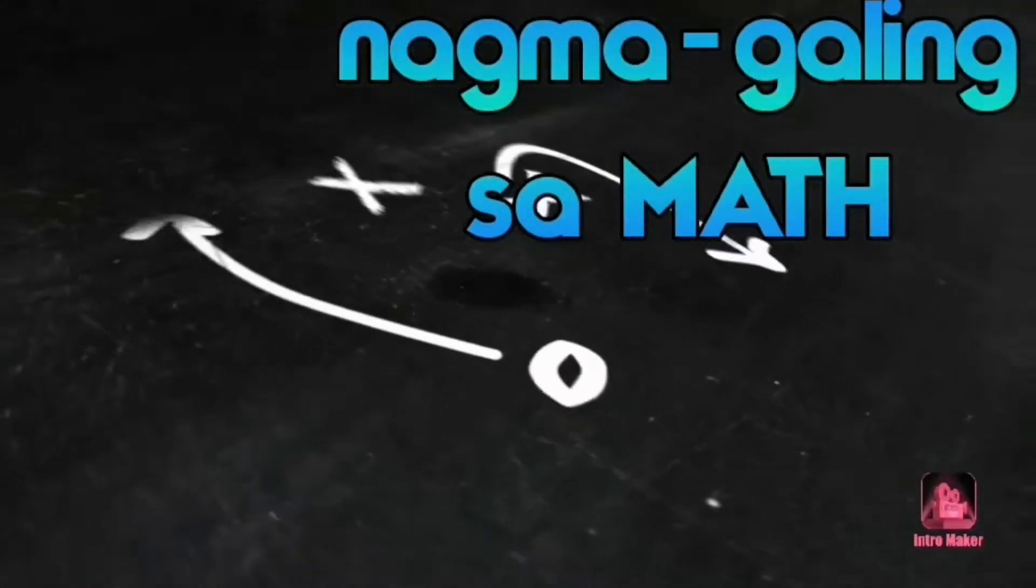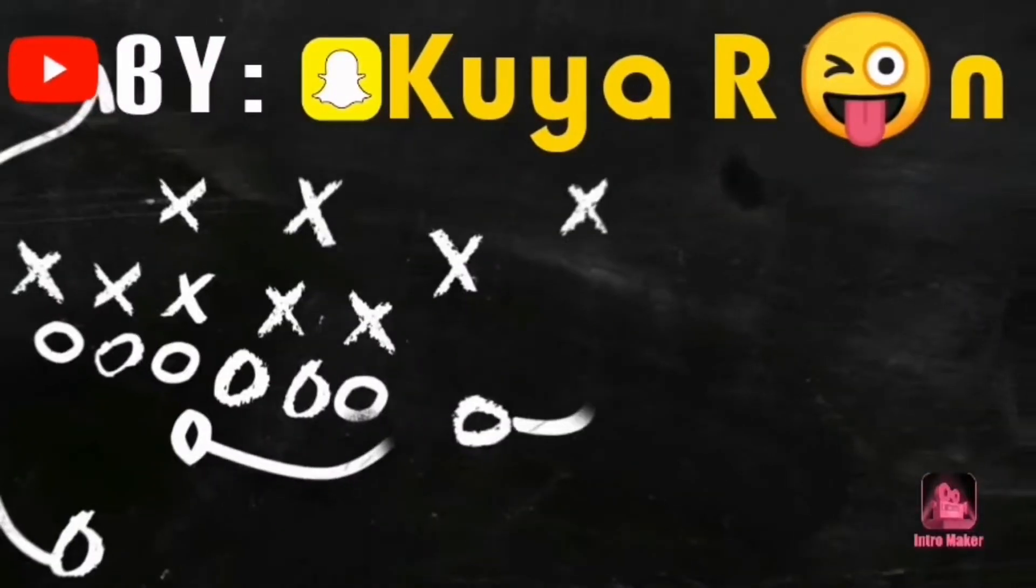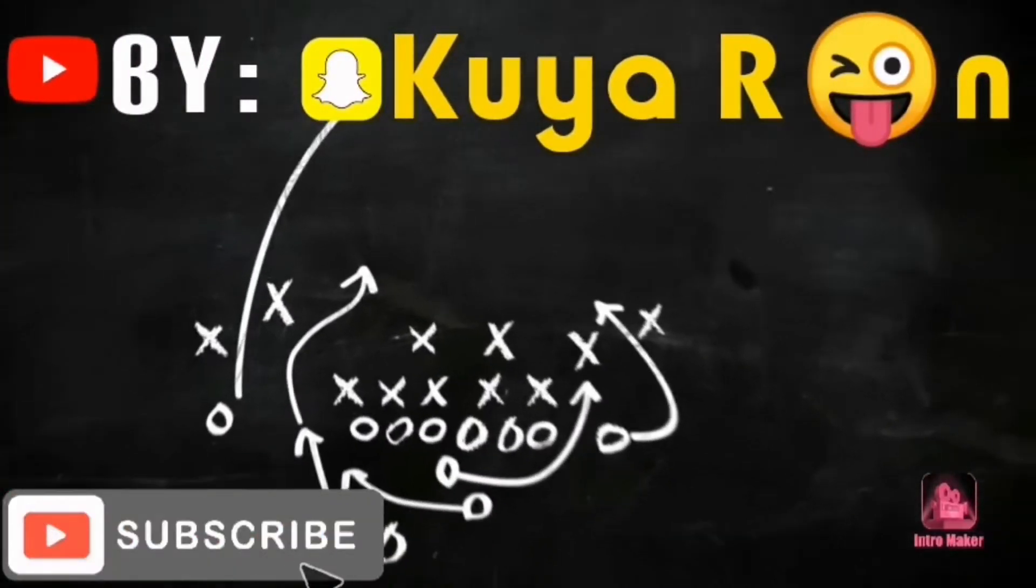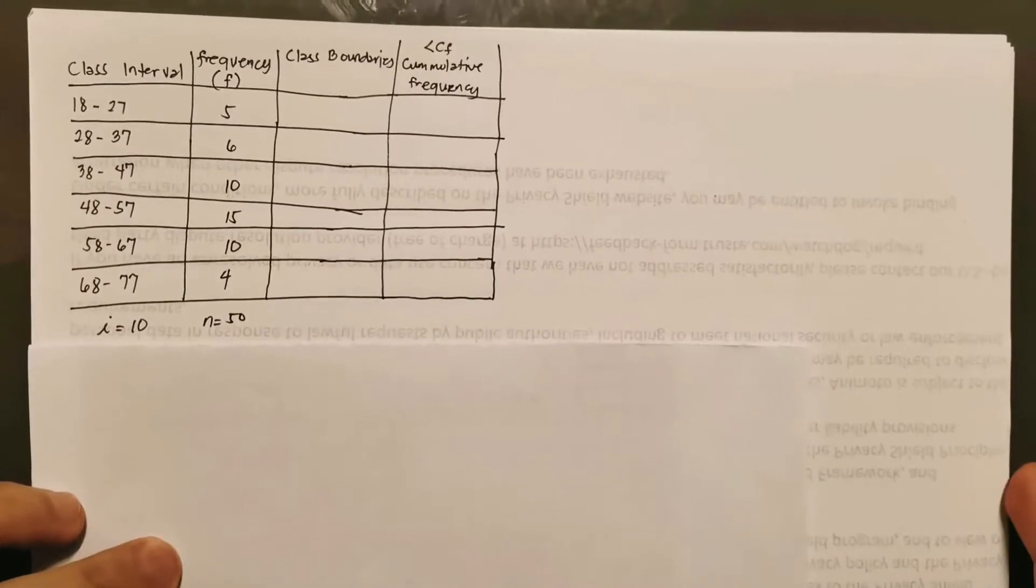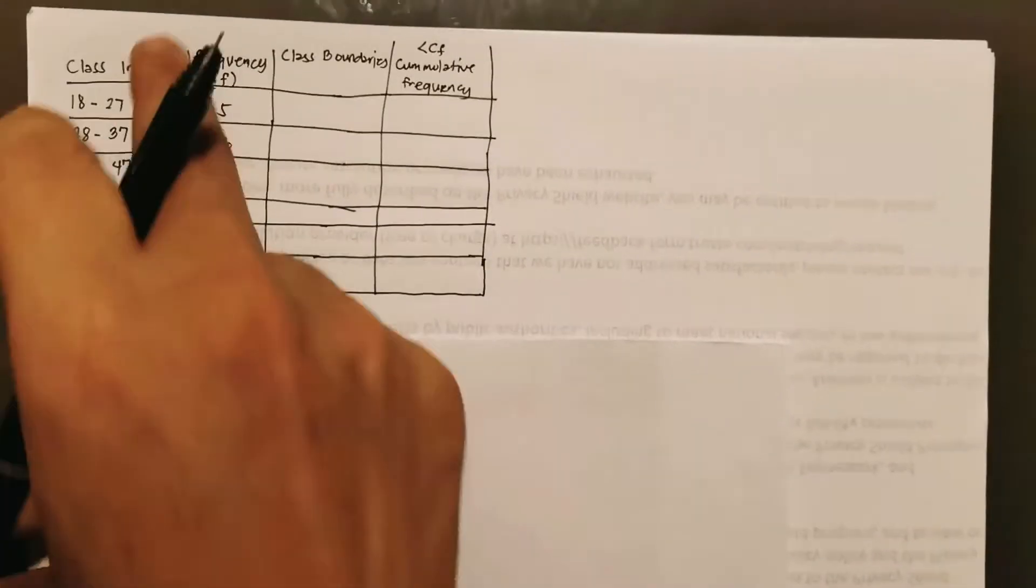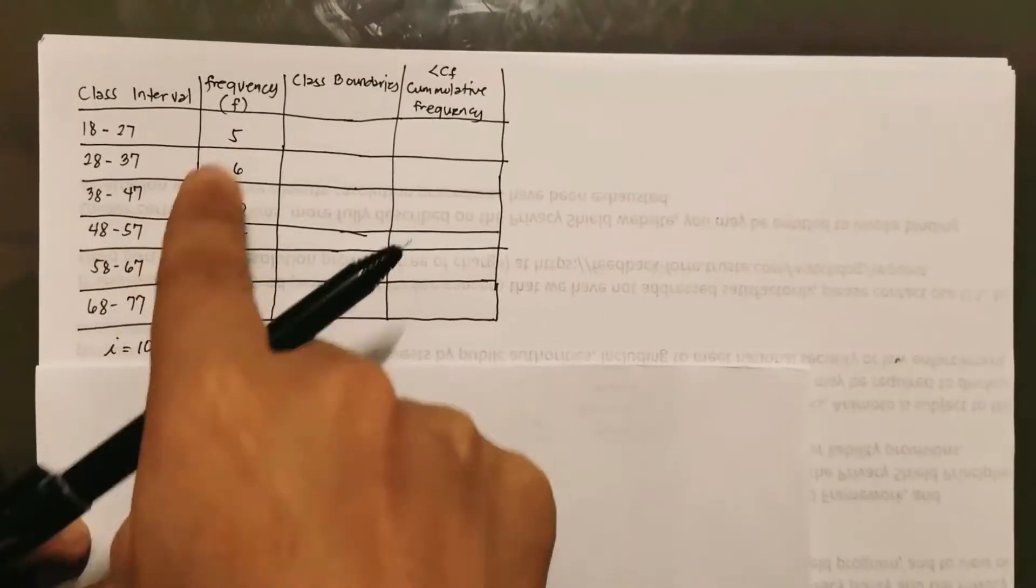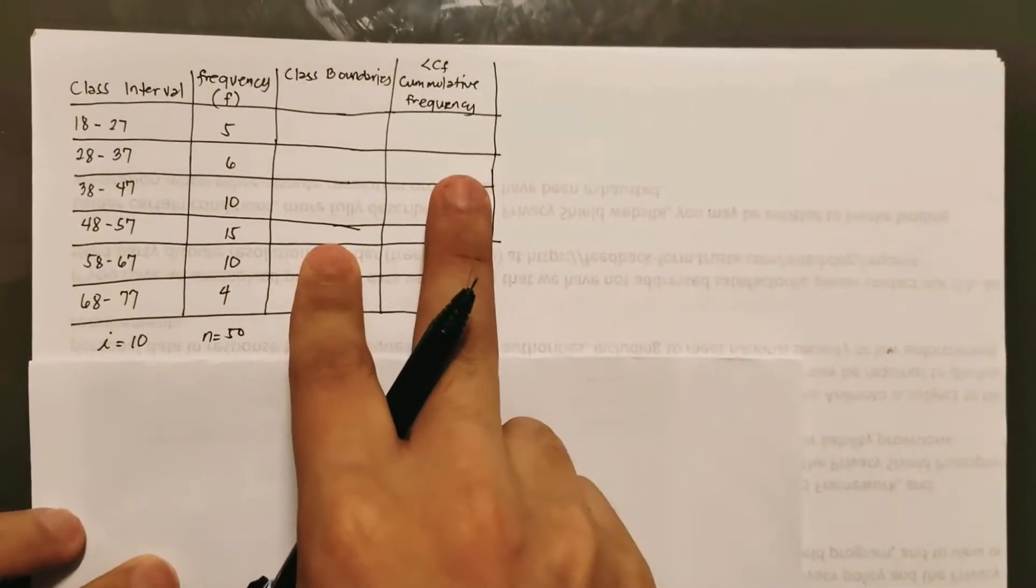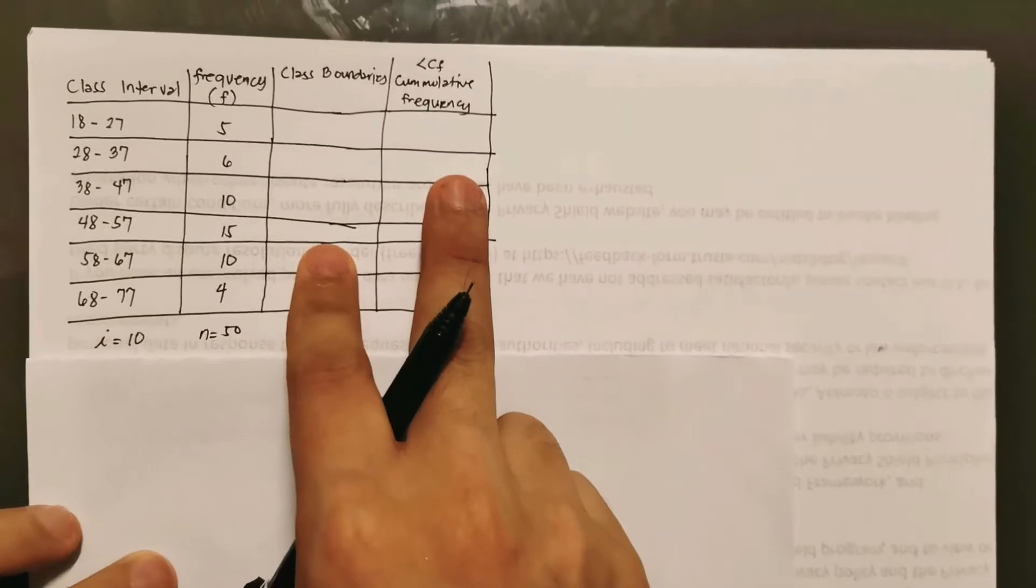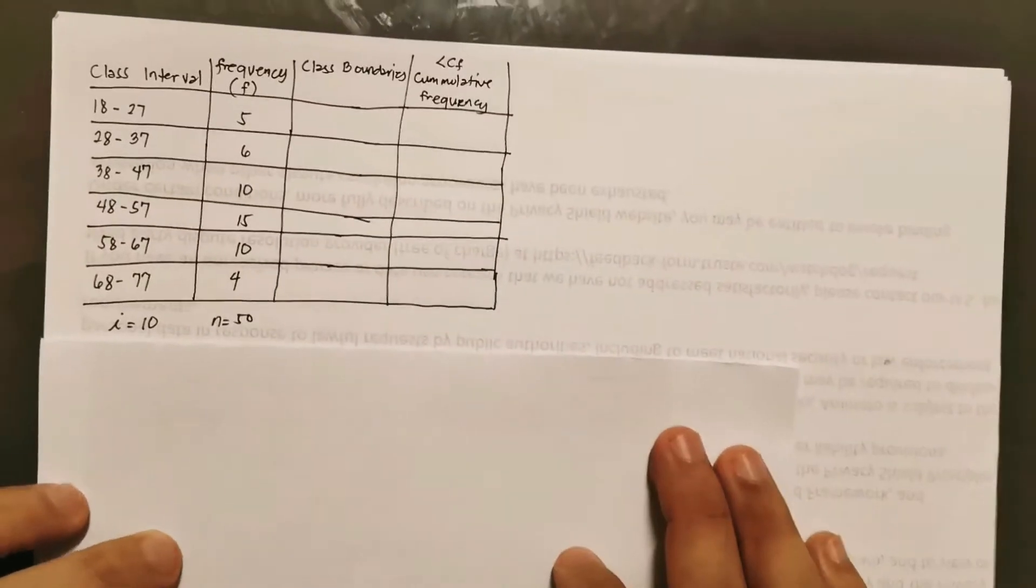I would like to share to you is another way or another measure of central tendency for grouped data. And it's the median. Well, surely median for grouped data is different, totally different with computing the median for ungrouped data. So what are we waiting for? Let's go! Okay, so here is our example in solving the median for grouped data. So this is our given, the class interval and then the frequency. Now, the two columns added here, these are the things needed to be filled out so that we can solve for our median.